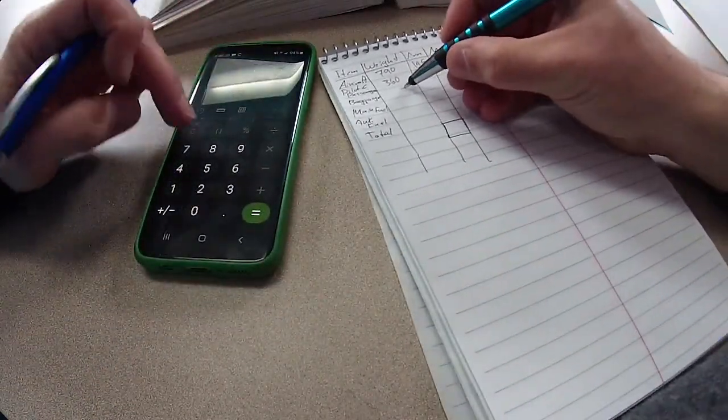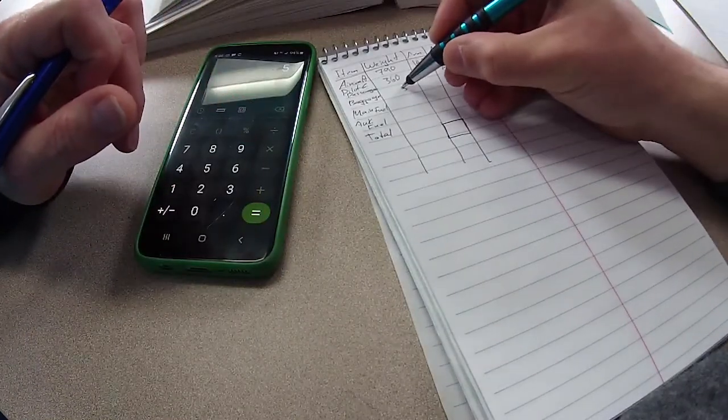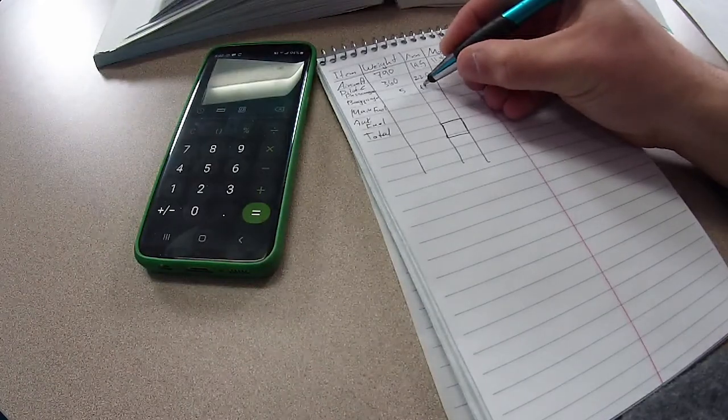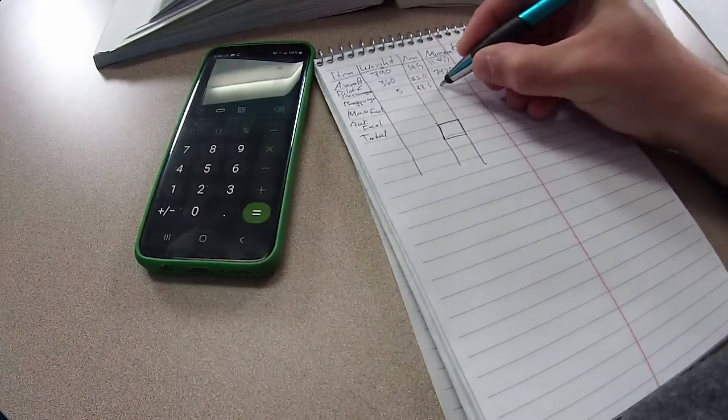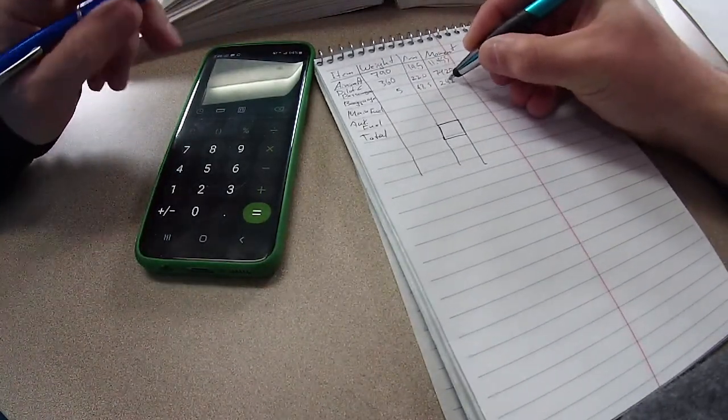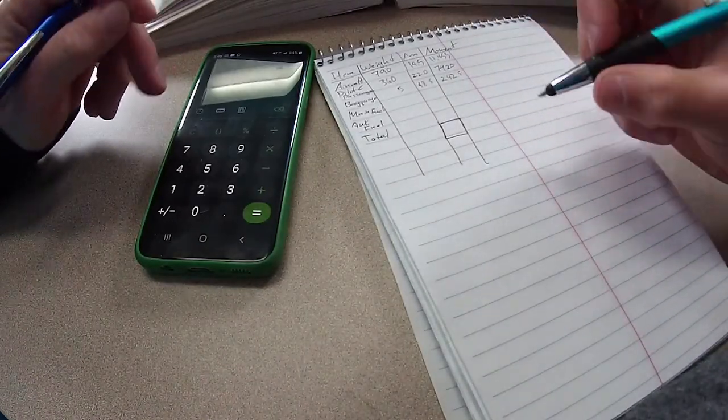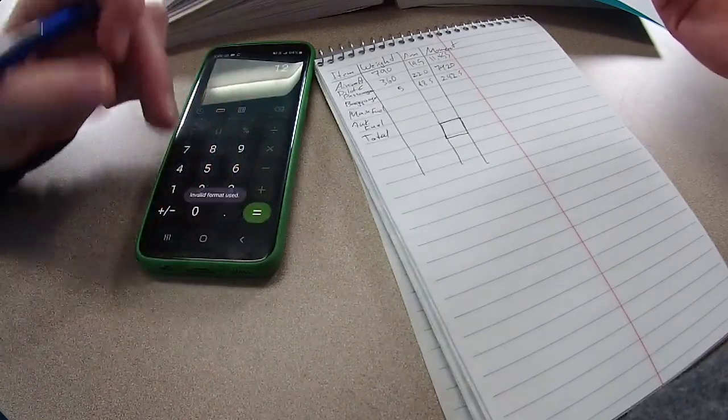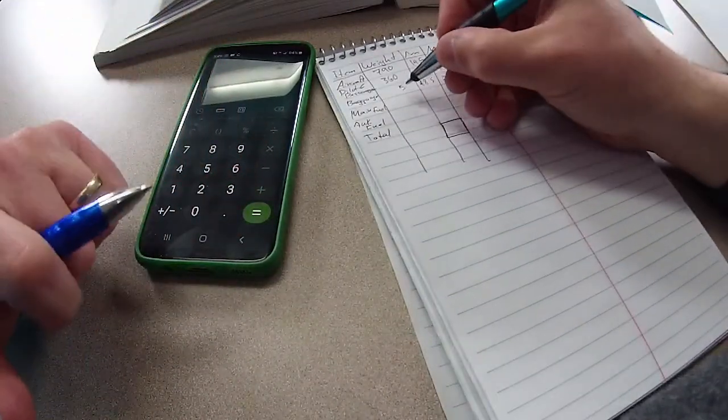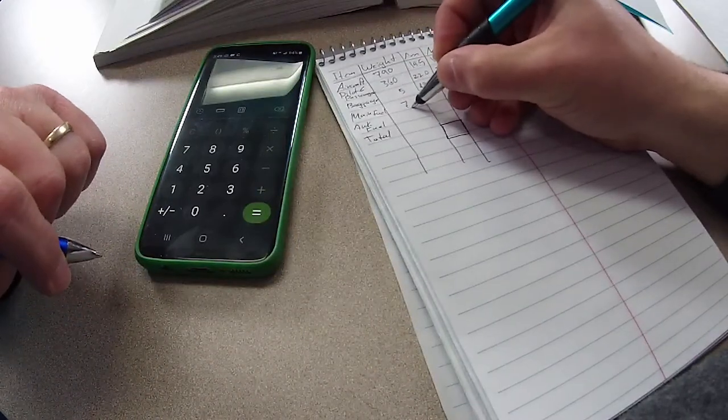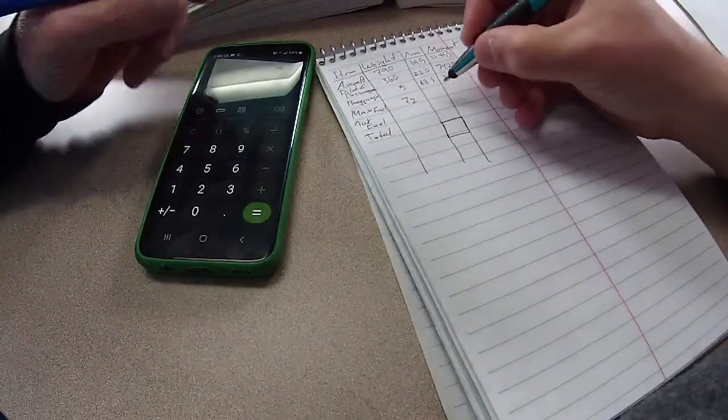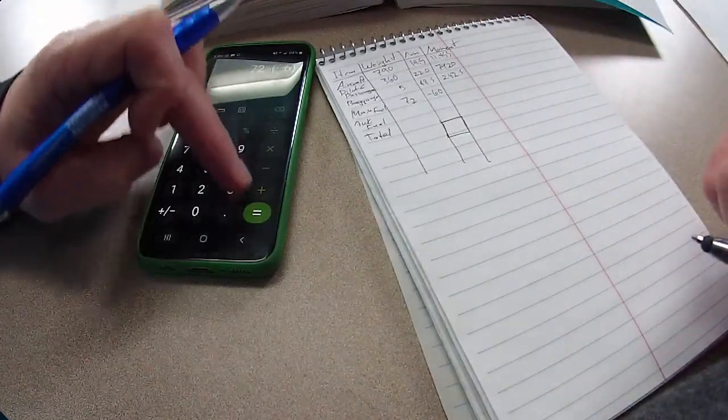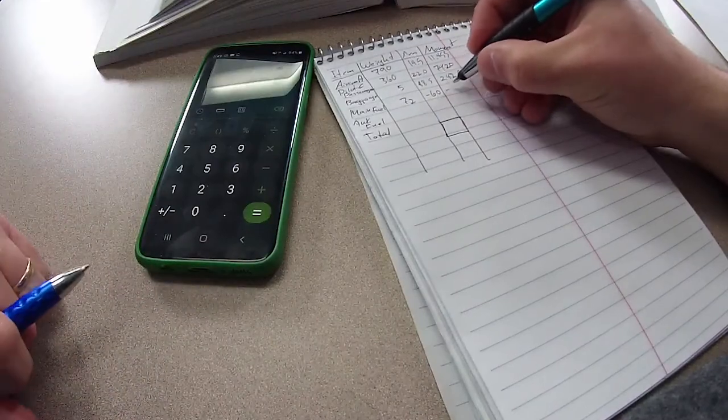Pilot and passenger, we said we were about 360 together, times 22 because we put the seat up. That's 7,920. Baggage, I think we said 5 pounds just for that log clipboard in the back, times 48.5 is 242.5.